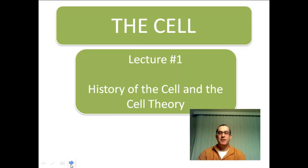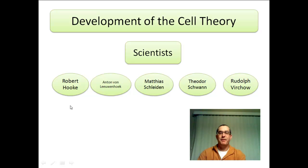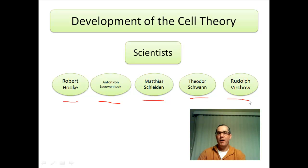The first slide shows five different scientists who contributed to the development of the cell theory. The slides to come will talk about each one in a little more detail. The five scientists are Robert Hooke, Anton von Leeuwenhoek, Matthias Schleiden, Theodore Schwann, and finally Rudolf Virchow.